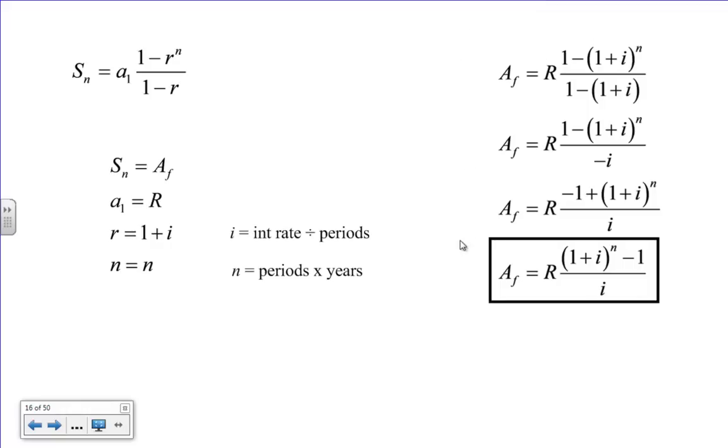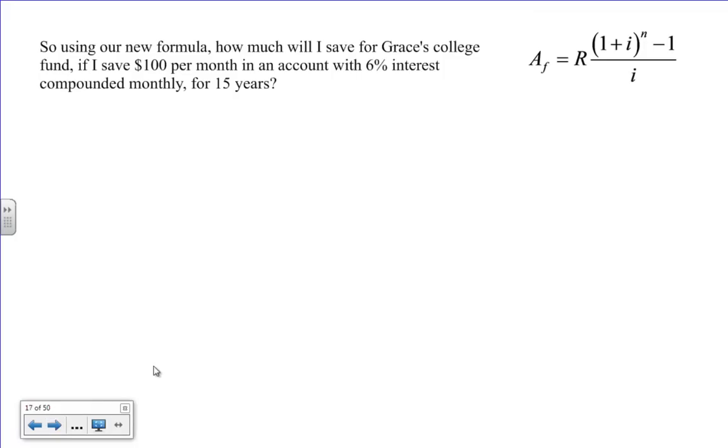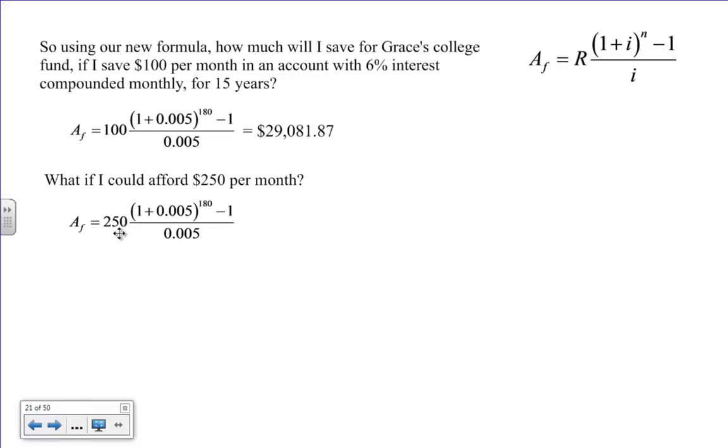So, using our new formula, how much will I save for Grace's college fund if I save $100 per month in an account with 6% interest compounded monthly for 15 years? I'm going to plug in A sub f equals 100 times (1 plus .005)—that's .06 divided by 12—raised to the 180th because we have 15 years times 12 months, that's 180 payments, minus 1 over .005. And I get $29,081.87. Now, what if I could afford $250 per month? Well, I'm going to do the same thing, plug it into my formula, and I get $72,704.68. Now, we're starting to get somewhere.